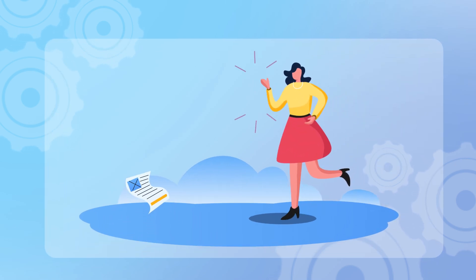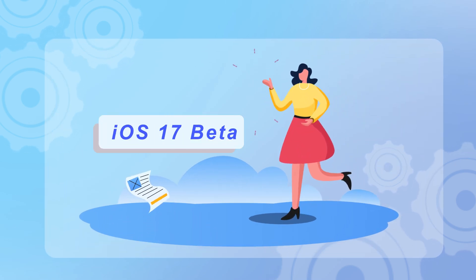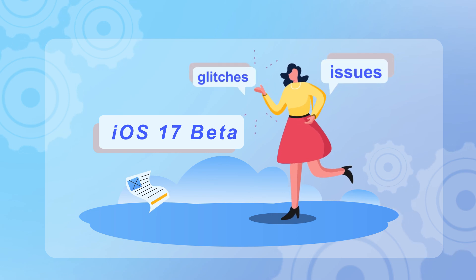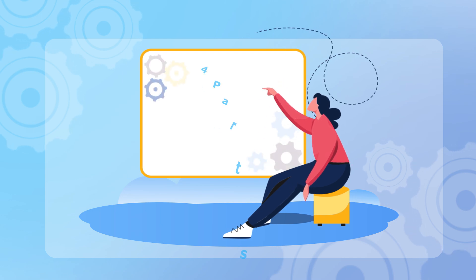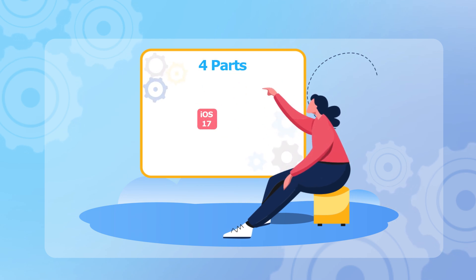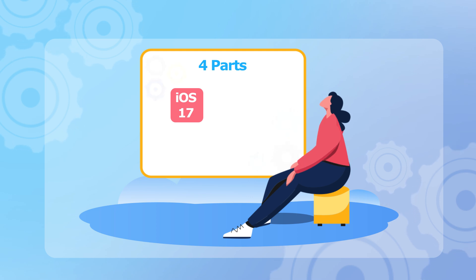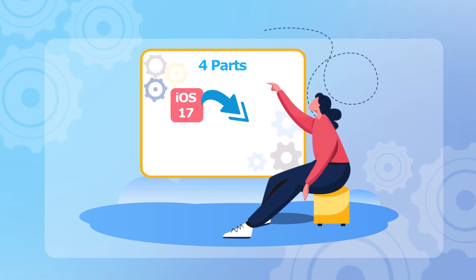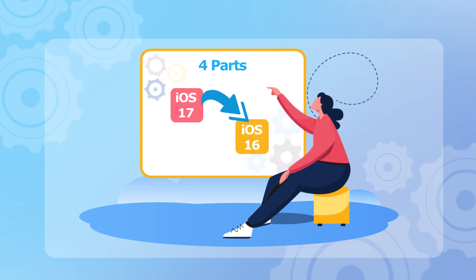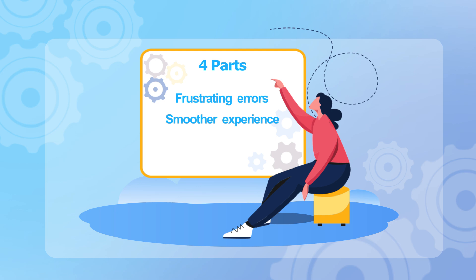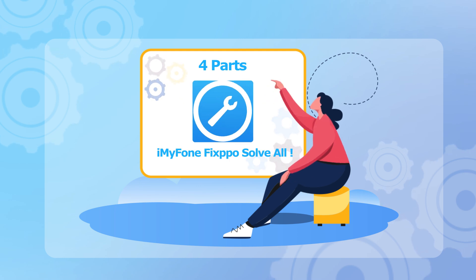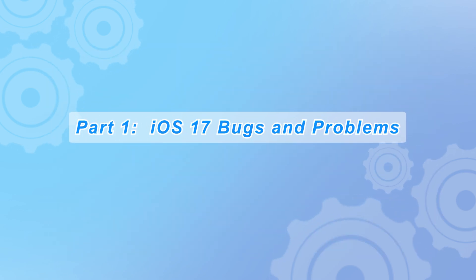Hi guys, welcome back to iMyPhone channel. In today's video, we take you through the world of the iOS 17 beta, exploring issues and glitches that have arisen since its release. This episode is divided into four parts in total, guiding you through the process of downgrading from iOS 17 to the more stable iOS 16. Whether you're facing frustrating errors or simply seeking a smoother experience, we've got you covered. Part one: iOS 17 bugs and problems.